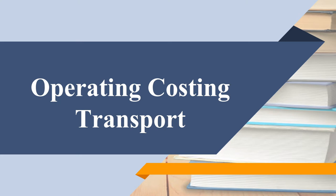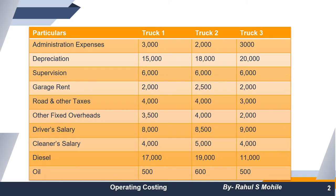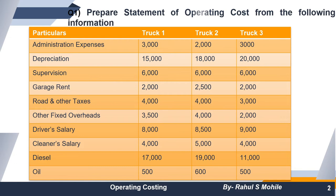Now we will see a question of transport. We have to keep two major points in mind: number one is the fixed cost, which is called standing charges, and number two is the running cost, which is called variable cost or variable charges.